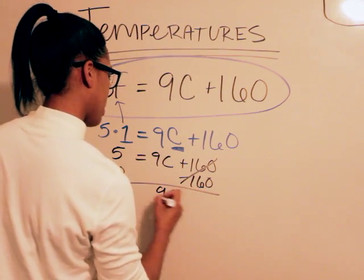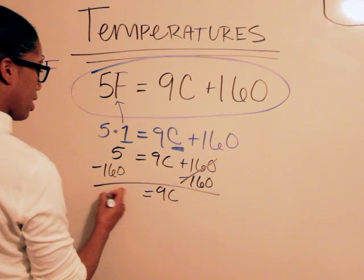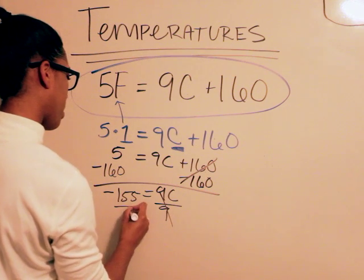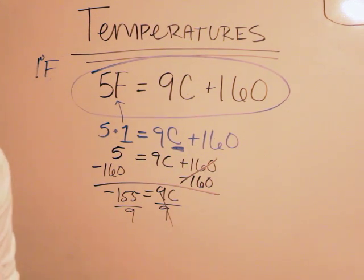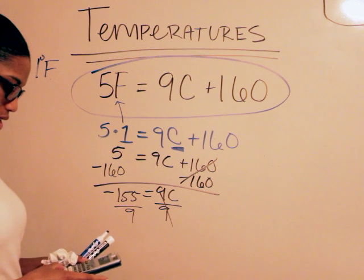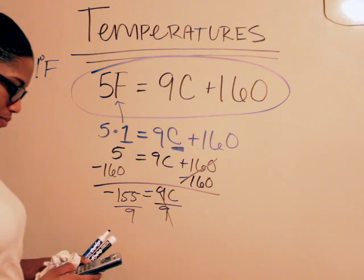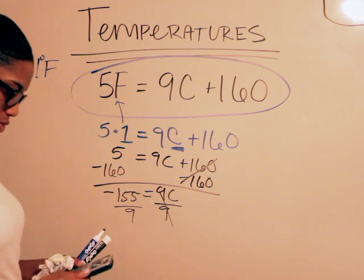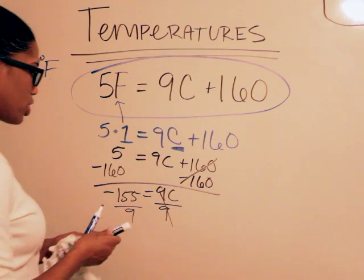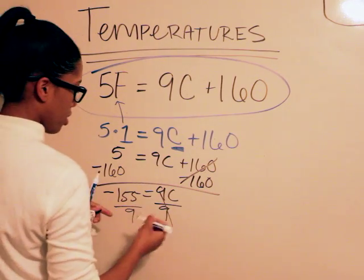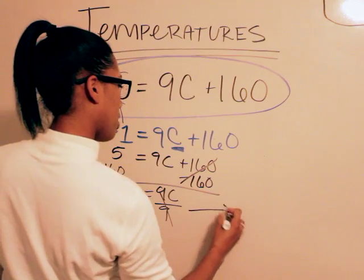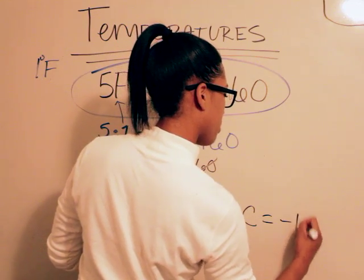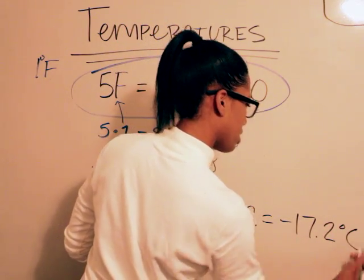So that leaves us with 9C equals negative 155, divided by 9, divided by 9, and we get the calculator out. C negative 155 divided by 9. If we do that in decimal form it will be about 17.2, or negative 17.2 rather. So the answer would be C equals negative 17.2 degrees Celsius.